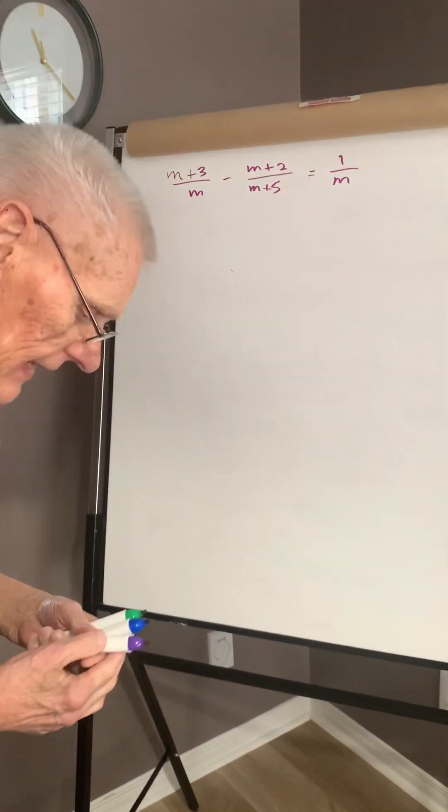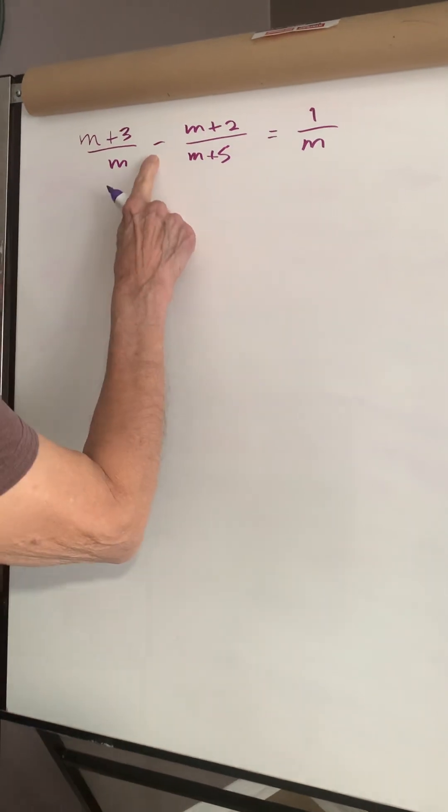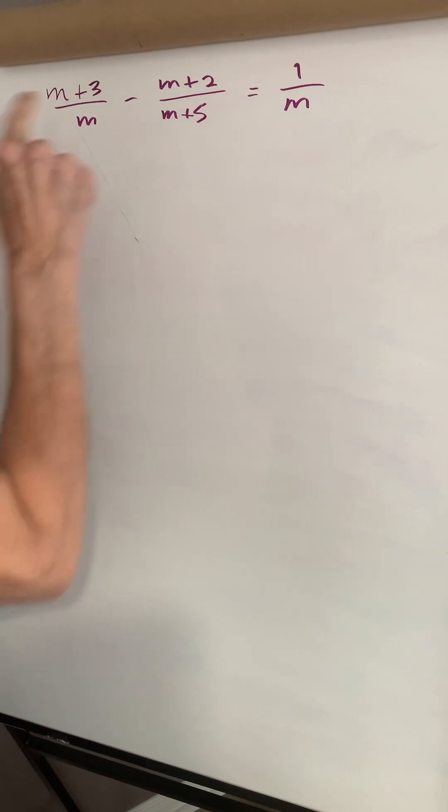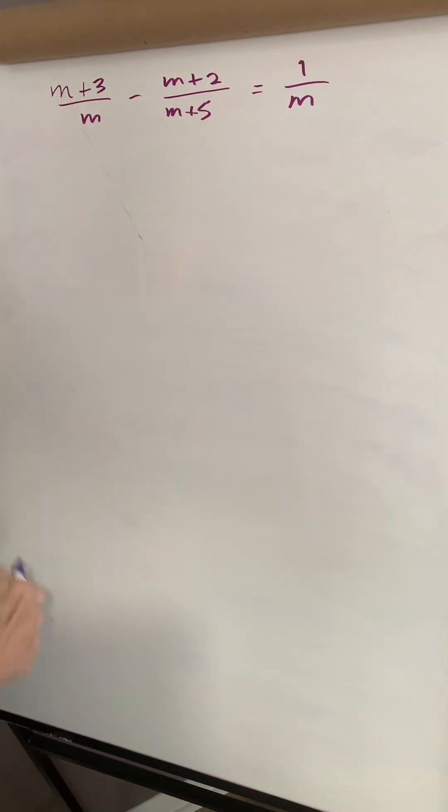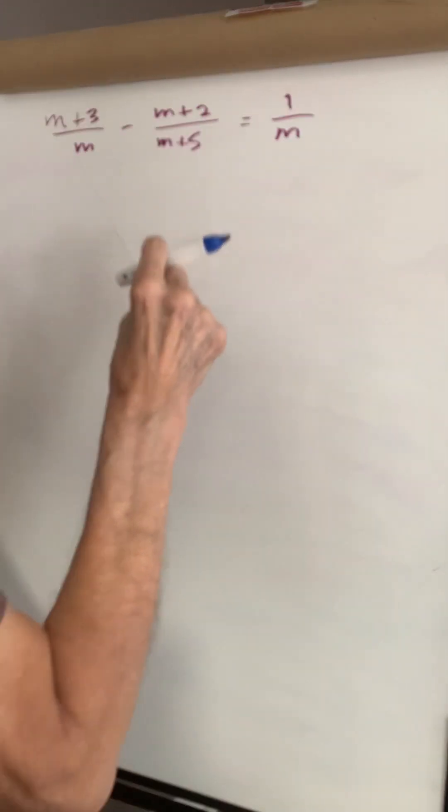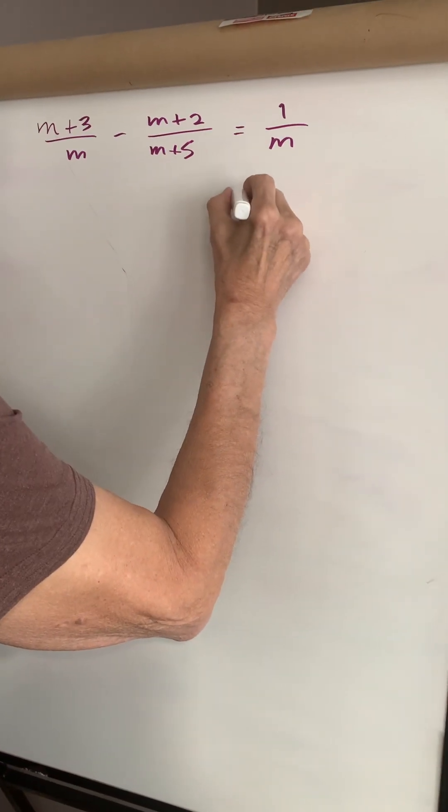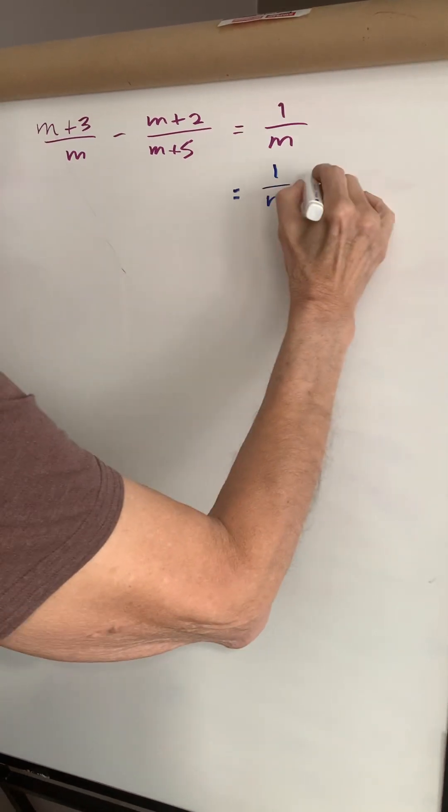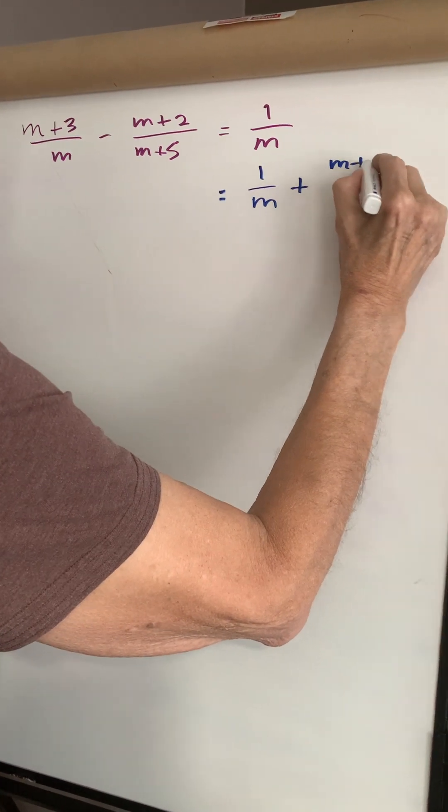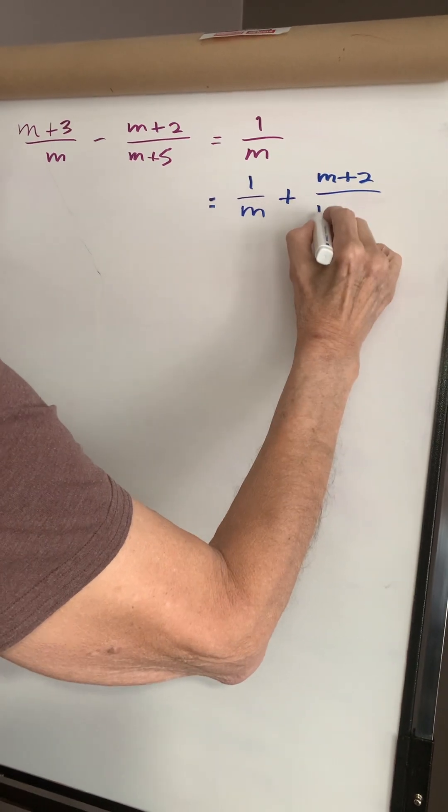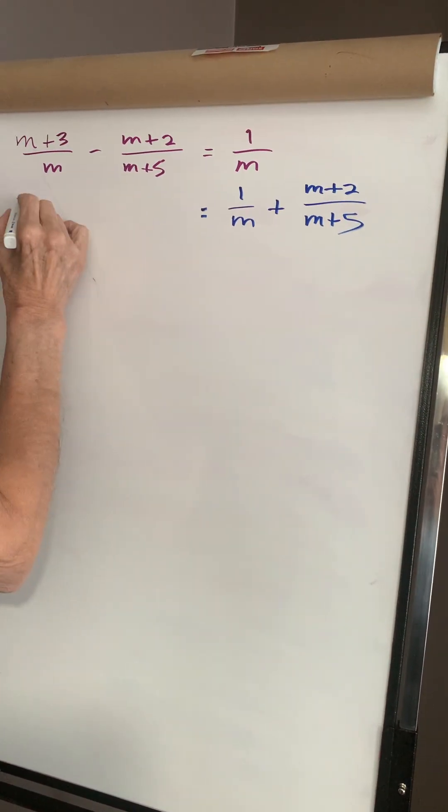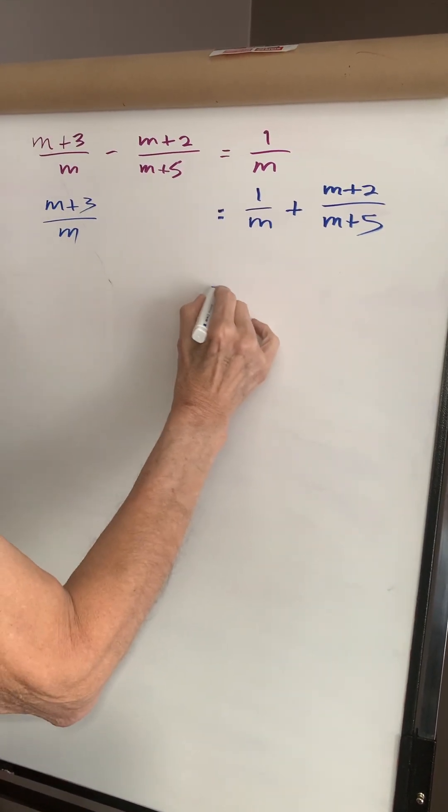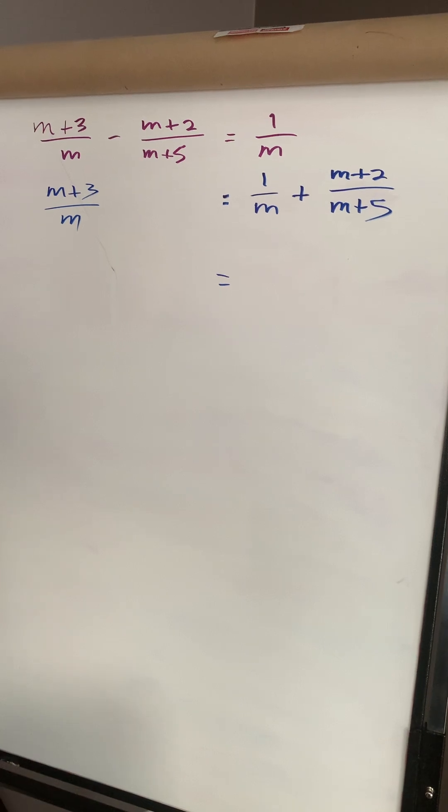Okay, solving equations. Once again, negative sign, equal sign, one term, two terms, three terms. This negative sign, I want to do something. I want to get rid of it. So I'm going to transpose it to join one over m, so that's going to become positive. It'll be m plus two over m plus five equals m plus three over m. Notice I'm always lining up the equal signs so I know what I transpose.